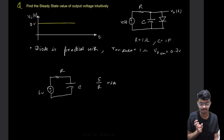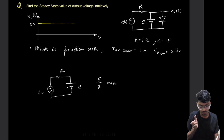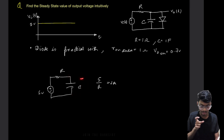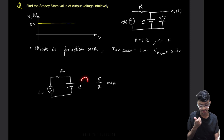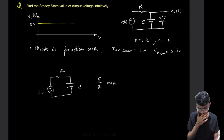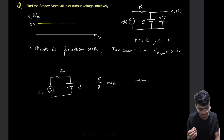As the voltage builds up across the capacitor, the charging rate becomes slower. But since the diode is connected in parallel with the capacitor, at the instant when the anode reaches 0.7V, the diode will turn on. Then some current will flow through the diode as well, alongside the capacitor current.